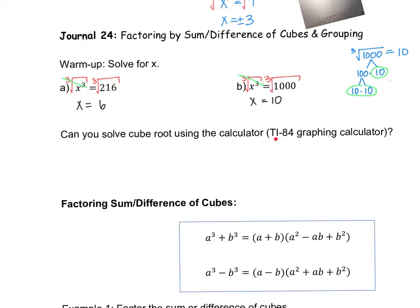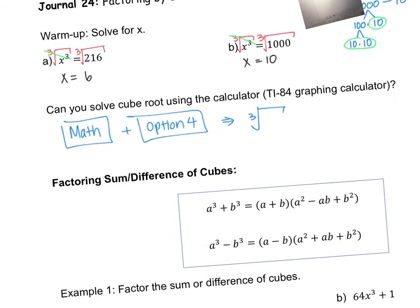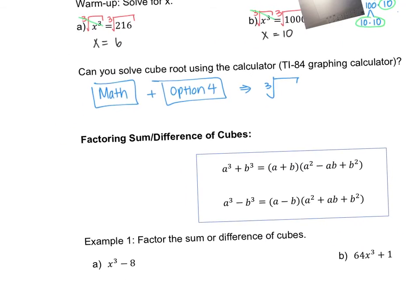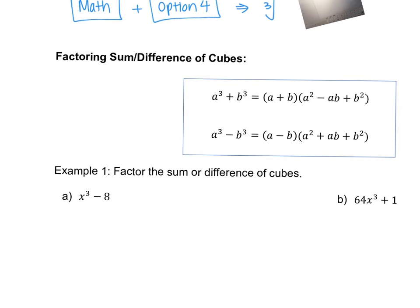So the cube root of 1000 is 10, and I could have also used the calculator — that would have been perfectly fine. To solve a cube root using the TI-84 calculator, all you have to do is hit Math and then hit option 4. You should get a cube root symbol. Practice with your calculator and try some more cube roots to get used to the process.